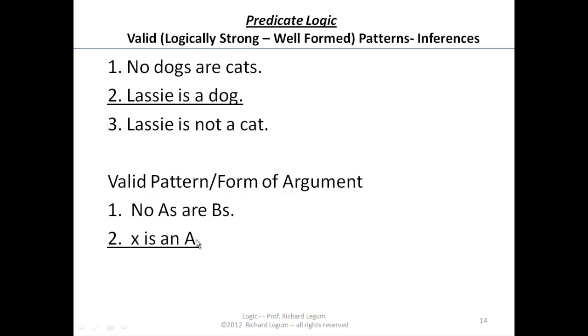But Lassie, x, is a dog, is an A, and the conclusion from that is x, Lassie, is not a B. She is not a cat.